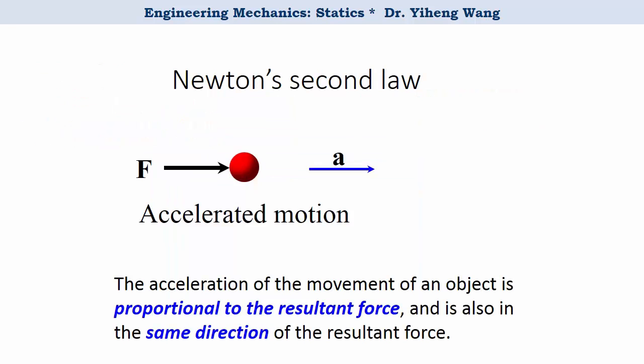I would like to start with Newton's second law, because Newton's first law can actually be considered as a special case of the second law. In Newton's second law, it is stated that if there is an unbalanced force acting on an object, it will cause accelerated motion. As a result, the acceleration of the object will be proportional to the resultant force, and this is summarized in this equation: F equals to M times A.